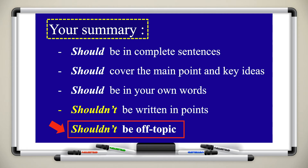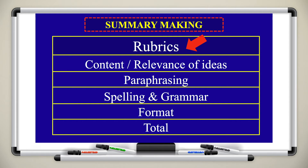Writing in points will affect your format and your grade. Your summary should not be off topic. Now let's look at the rubrics. First is content and relevance of ideas — make sure your ideas are related to the text and connected to the summary question. Second is paraphrasing: change sentences into your own words by changing vocabulary, changing verb class, shortening ideas, or changing active sentences into passive.